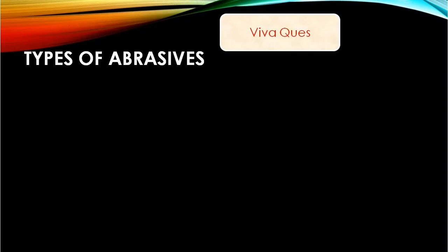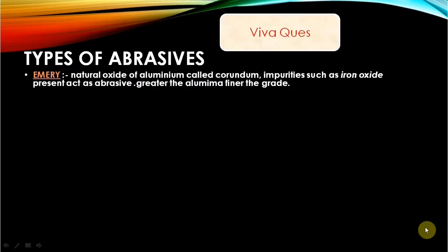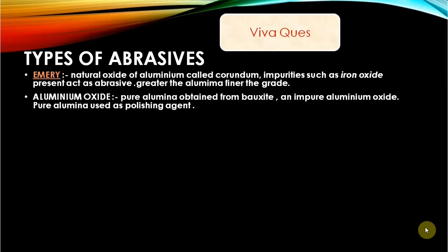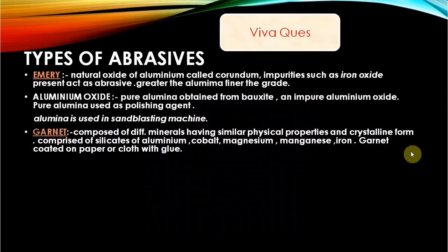Types of abrasives are an important 'why' exam question. Emery is a natural oxide of aluminum called corundum; impurities in it like iron oxide act as the abrasive. Aluminum oxide — pure alumina is used as a polishing agent, and alumina is also used in sandblasting machines. Garnet is composed of different minerals having the same physical properties and crystalline form; glue is used as a binder to coat it on paper or cloth.